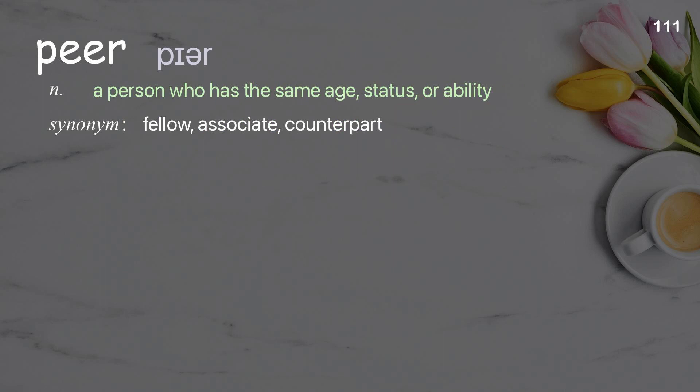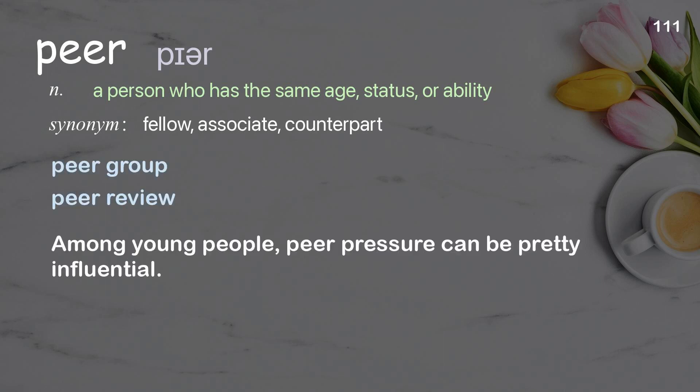Peer: a person who has the same age, status or ability. Examples: peer group, peer review. Among young people, peer pressure can be pretty influential.